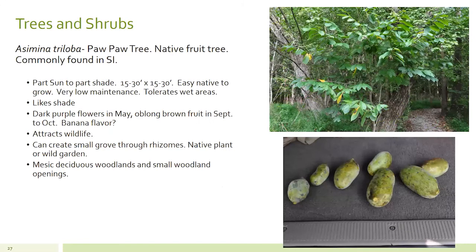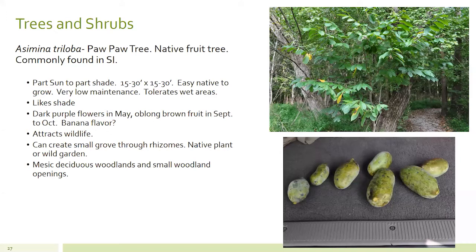Wrapping up, pawpaw is one of our really unique native fruit trees commonly found in Southern Illinois. It can get up to thirty by thirty feet and is easy to grow in our environment — really low maintenance and tolerates clay and wet soils. It likes marginal wet areas and really likes shade — it's suited for understory shady wet conditions. In spring in May it has an interesting purple flower. This is what pawpaws look like, and this is a harvest I got a couple of days ago.